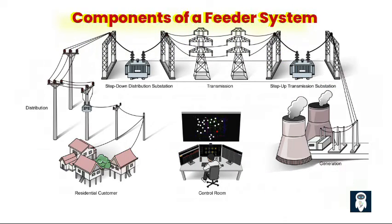A feeder system in a power distribution network consists of several components that work together to transmit electrical power from the source to the consumers. First, the source or substation is the starting point of the feeder system — it can be a power plant, a substation receiving power from a higher voltage transmission system, or a distribution transformer. Second, feeder lines are the conductors that carry electrical power from the source to the load points, made of copper or aluminum, either overhead or underground, and sized appropriately to handle the expected load.